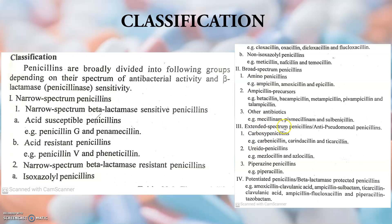The extended-spectrum penicillins with anti-pseudomonal activity include carboxypenicillins such as carbenicillin, carindacillin, and ticarcillin. The ureidopenicillins are mezlocillin and azlocillin. The piperazine penicillins are very effective against Pseudomonas — piperazillin (piperacillin) is the best example, as it has the best action towards Pseudomonas infection.